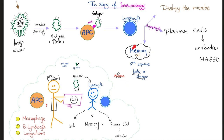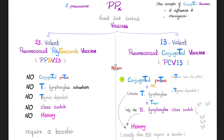The third option is to make memory cells to remember the bacteria, so that if the bacteria comes again in the future, the second response is faster and stronger. This is the basis for prophylaxis for Streptococcus pneumoniae.